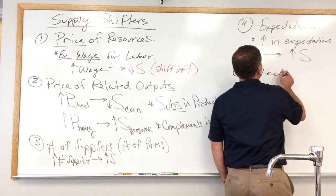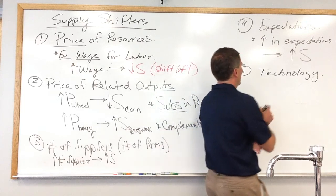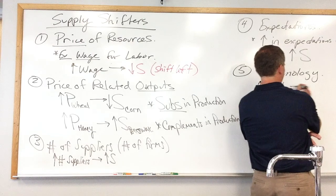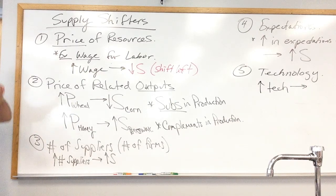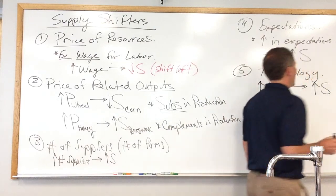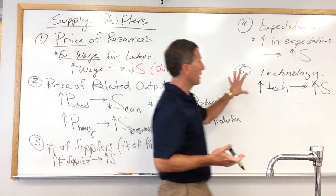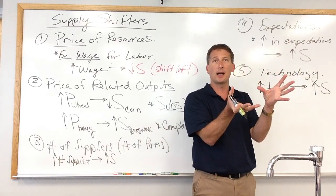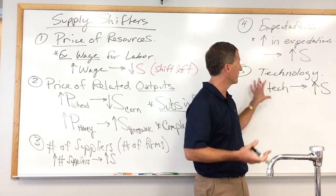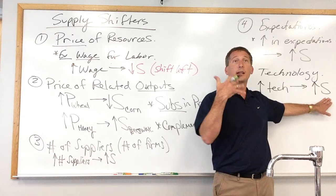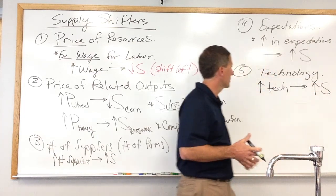Supply shifter number five: technology. An increase in technology would generally lead to an increase in supply. Within the honey industry, if there's a new machine that processes honey faster or harvests bees better, that increases productivity — the amount of honey processed per dollar goes up — so producers can supply more honey at each of those old prices.